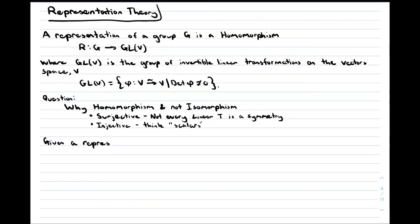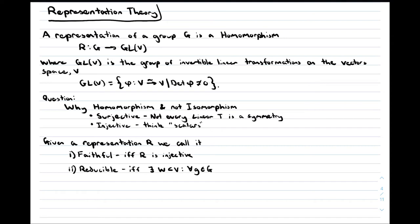We call a representation reducible if there is some sub-vector space W such that any element of the group acting on any vector in this subspace stays within the subspace. If the representation is reducible, we can break it up into its irreducible parts and study them separately. In particle physics, we will find it useful to identify single particles with irreducible representations, and consider the entire space to be built up from these irreducible parts.